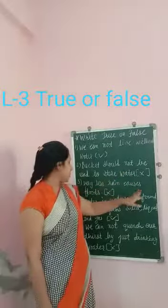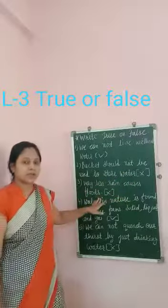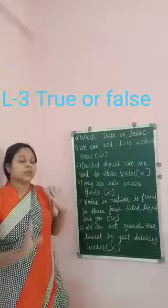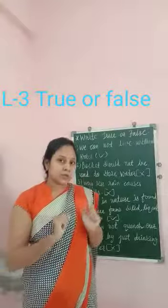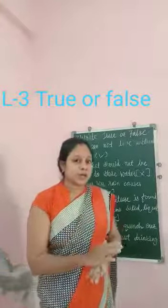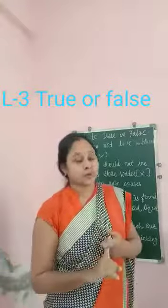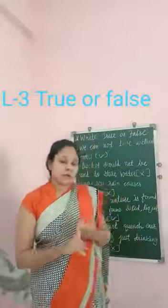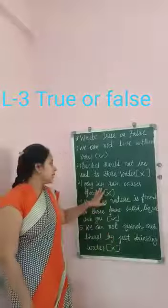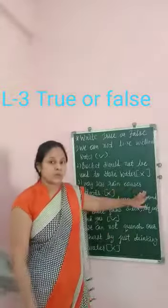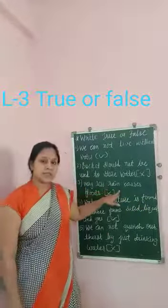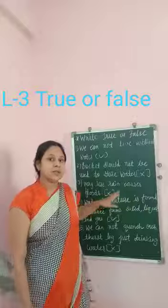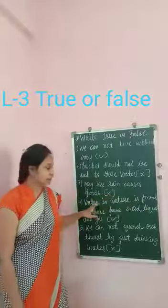Number 3 — Very less rain causes floods. It's false. Very less rain causes drought, but if there is more rain, it causes floods.